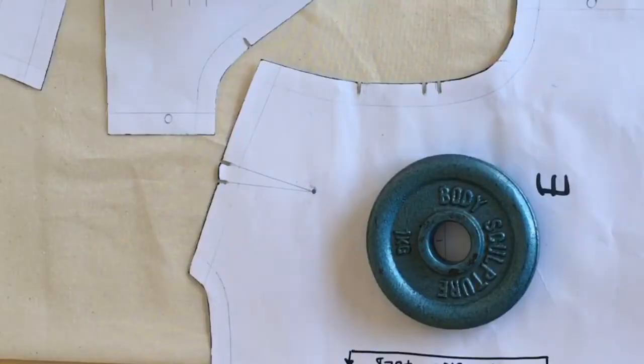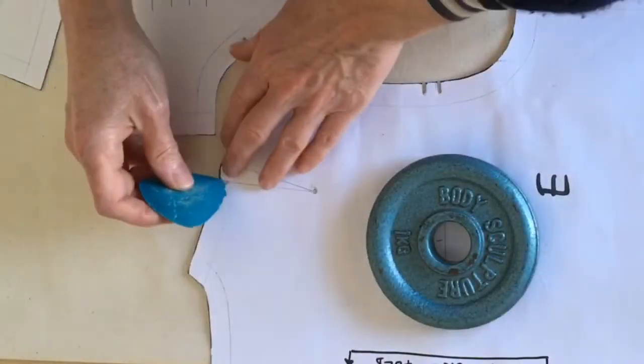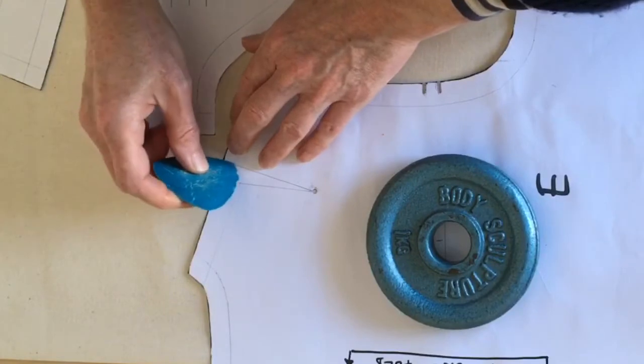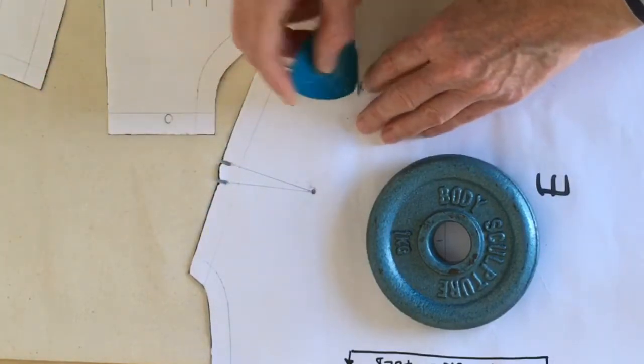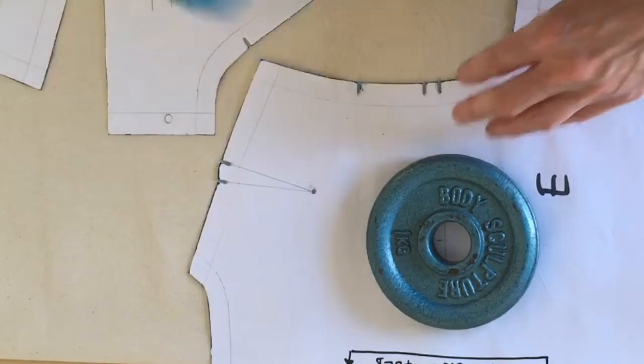Okay, so then double checking with all of the notches, so I'm going to mark out this notch here and here, this one and this one and this one.